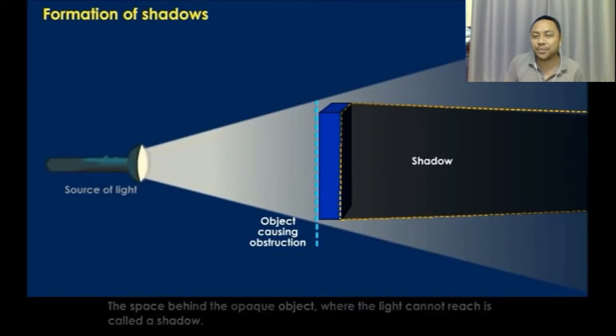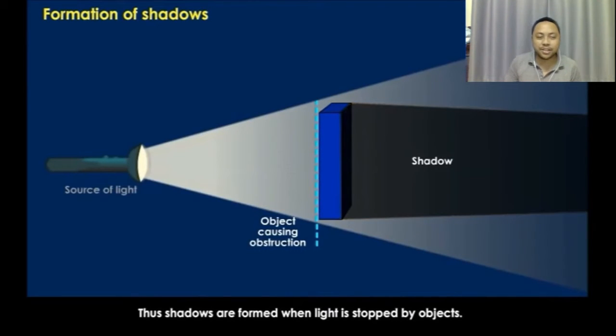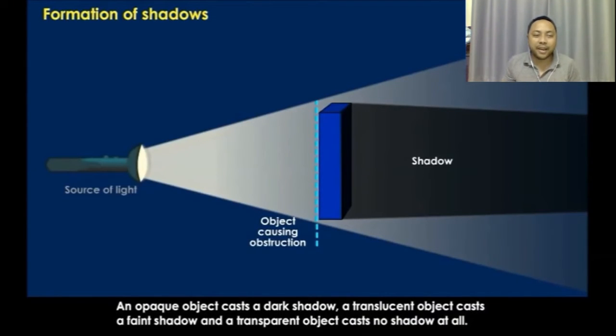Thus, shadows are formed when light is stopped by objects. An opaque object casts a dark shadow, a translucent object casts a faint shadow, and a transparent object casts no shadow at all.